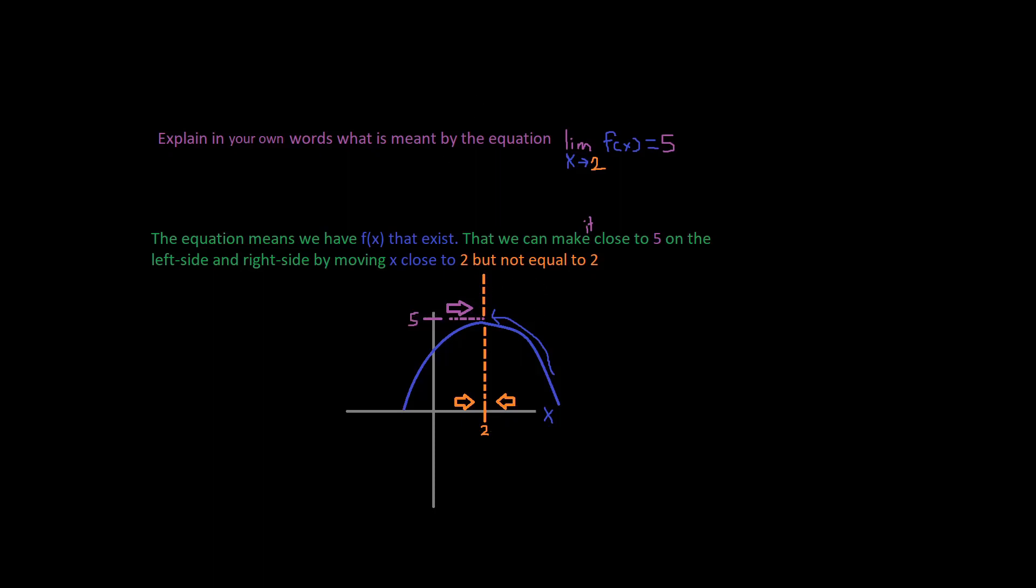And 5 stands for our limit. So as our curve, our function is getting close to 2, it's going to equal 5 right here for the y axis. And it's 2 for the x axis. As you can see right here, they meet up right here on this point of interest on the function,